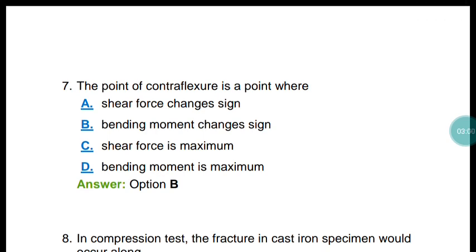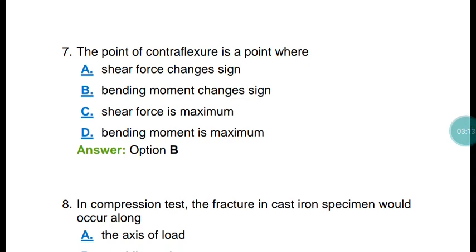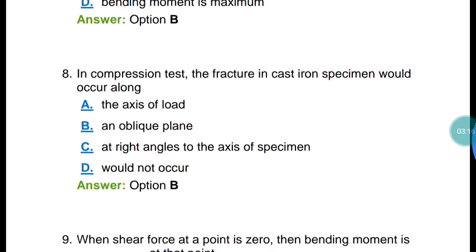Question number seven: Point of contraflexure is the point where the bending moment is zero. Question number eight: In a compression test, the fracture in a cast iron specimen occurs along an oblique plane — option B. For cast iron under compression, the failure plane is at 45 degrees, while for ductile materials under tension the failure plane is also at about 45 degrees.